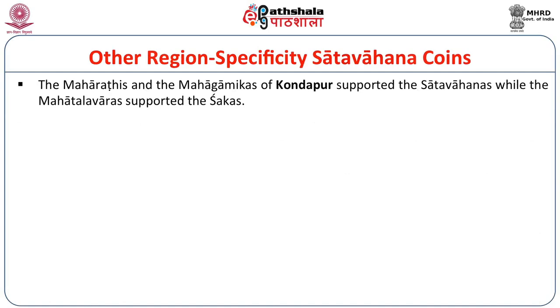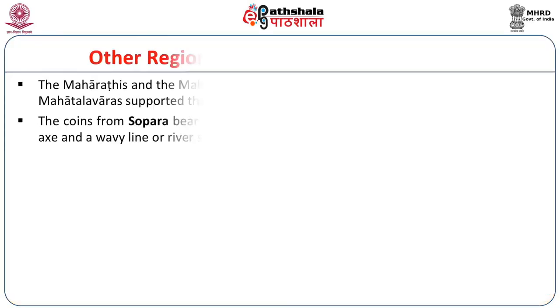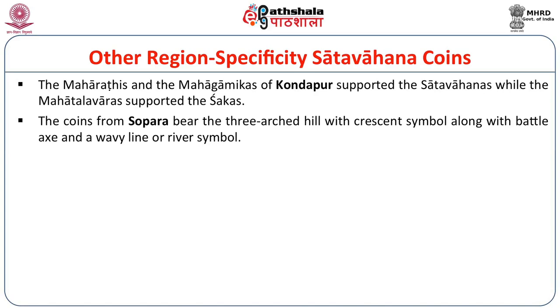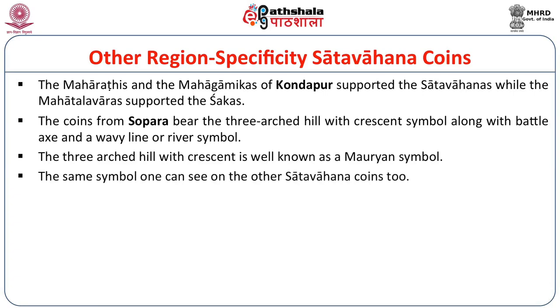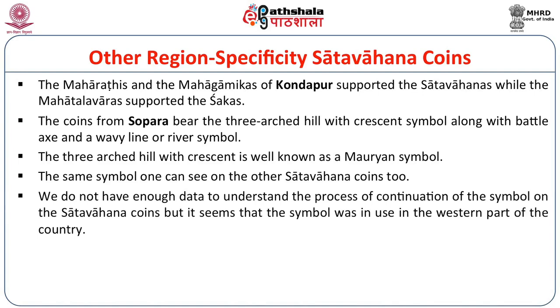The Maharathis and Mahagamikas of Kundapur supported the Satavahanas, while the Mahatalvars supported the Shakas. The coins of Sopara bear a three arched hill with crescent along with back legs and a wavy line or river symbol. The three arched hill with crescent is well known as a Mauryan symbol. The same symbol can be seen on other Satavahana coins too, though we do not have enough data to fully understand the process of continuation of this symbol — it seems the symbol was in use in the western part of the country.